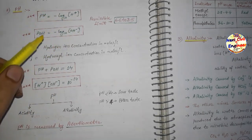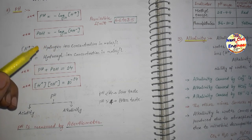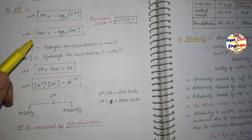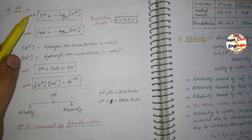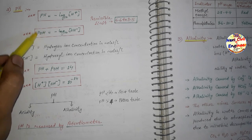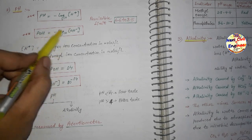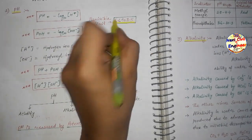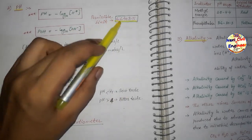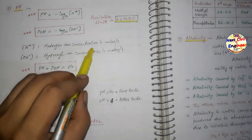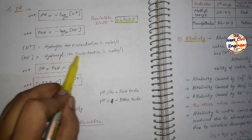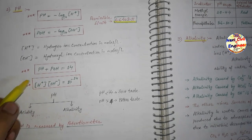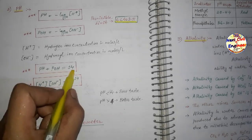It is recommended to make your own notes. The formula for pOH is: pOH = −log[OH⁻]. The permissible limit of pH is 6.5 to 8.5. H⁺ is the hydrogen ion concentration in moles per liter, and OH⁻ is the hydroxyl ion concentration in moles per liter. A very important formula: pH + pOH = 14. Another important formula: the product of [H⁺] and [OH⁻] = 10⁻¹⁴. These four formulas should be at your fingertips.